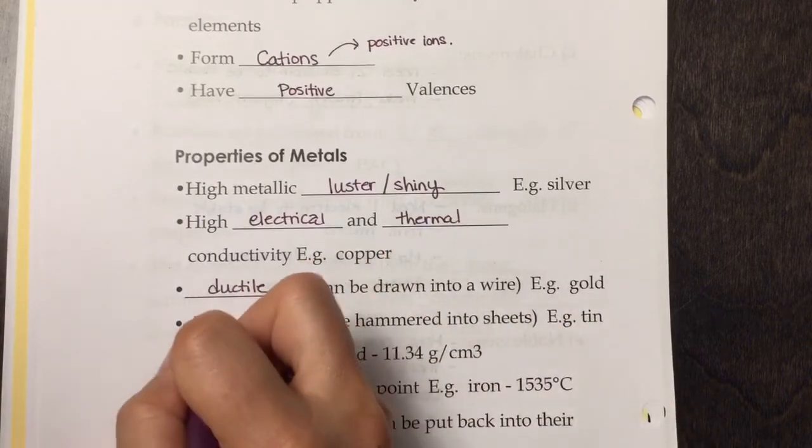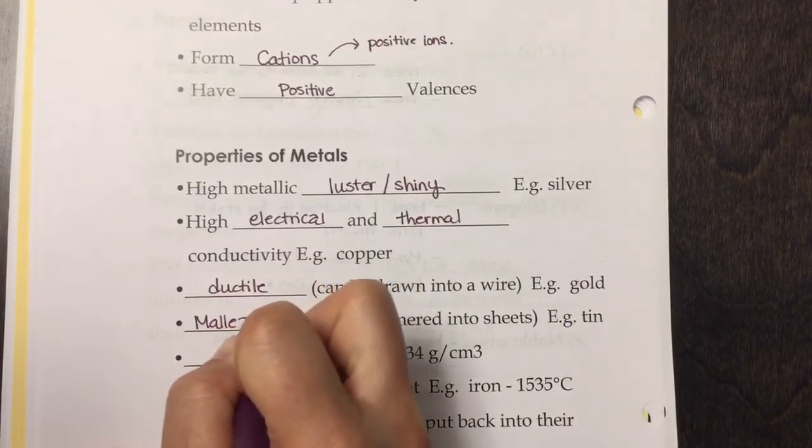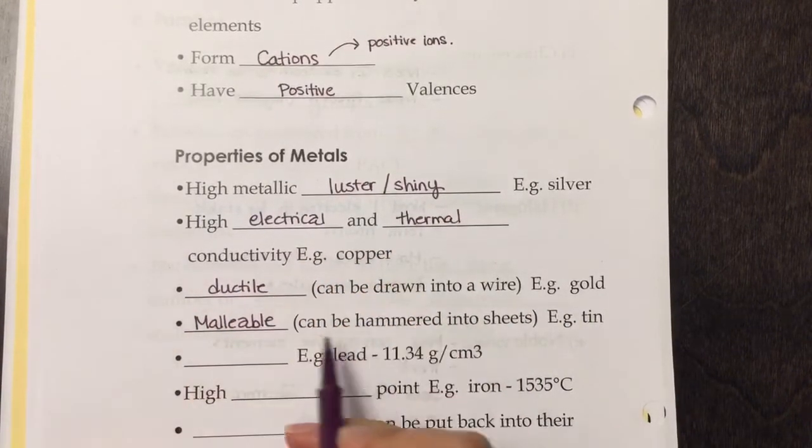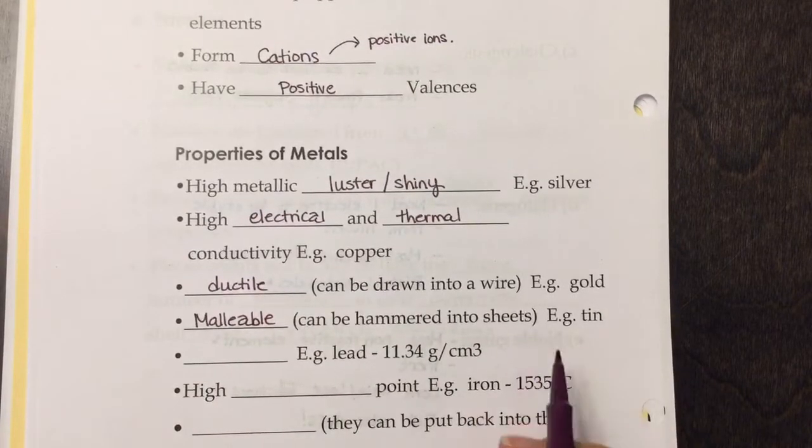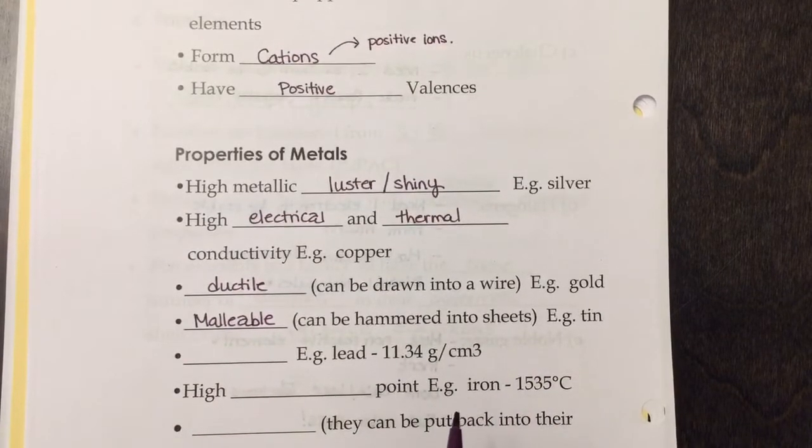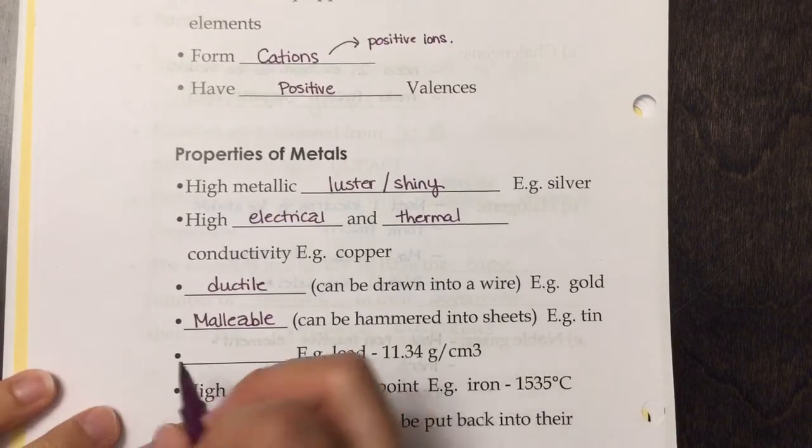They are malleable, which means they can be hammered into sheets. This is why it's a good material to use for our cars. When we get a dent, we can hammer it back into where it's supposed to go.